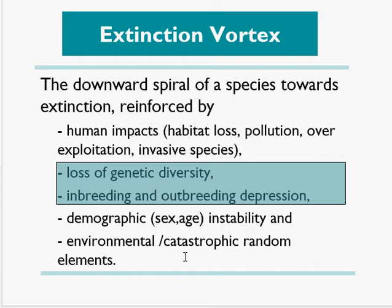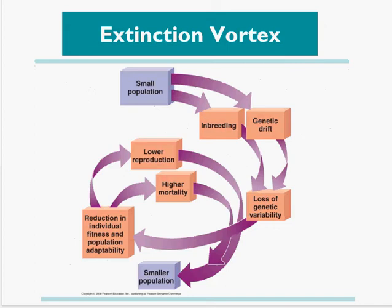This loss of genetic diversity can lead to a downward spiral. You have a small population — inbreeding and genetic drift lead to loss of genetic variability, which leads to a reduction in individual fitness and adaptation ability of the population, which leads to lower reproduction and higher mortality, which leads to a smaller population again, which again leads to inbreeding and genetic drift. In that way, the population of the rare species begins to decrease and decrease, the pressures are not relieved, and eventually that population shrinks to zero — the species is no more, and we have an extinction.